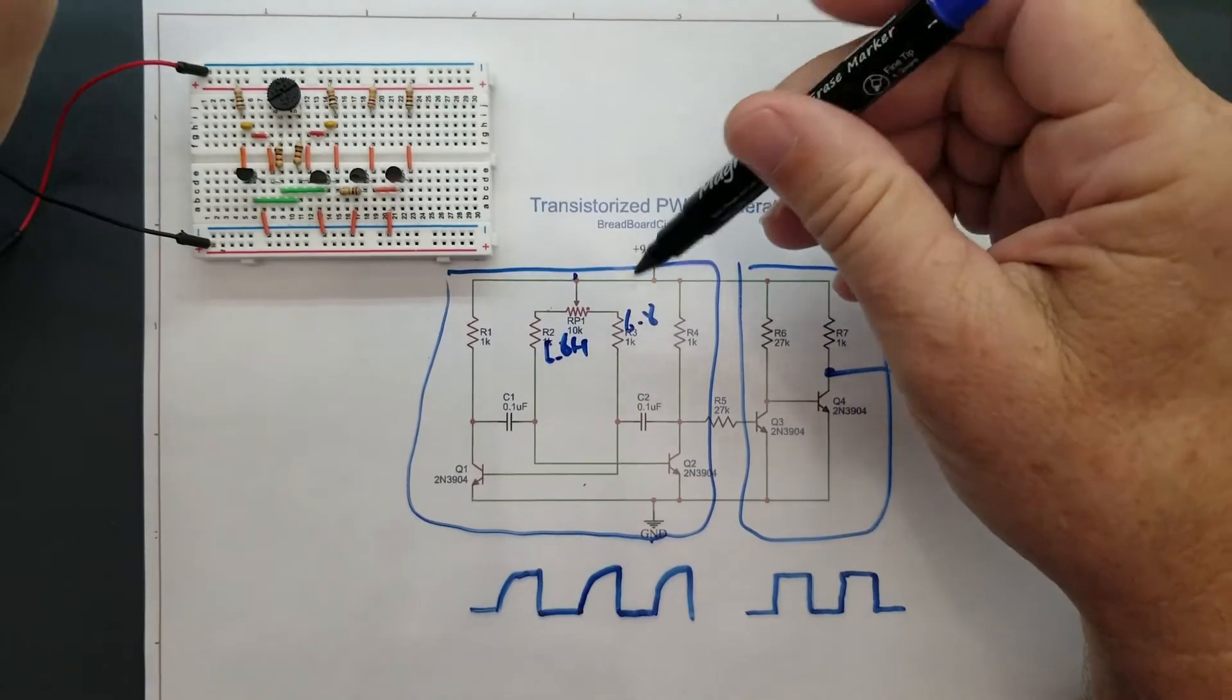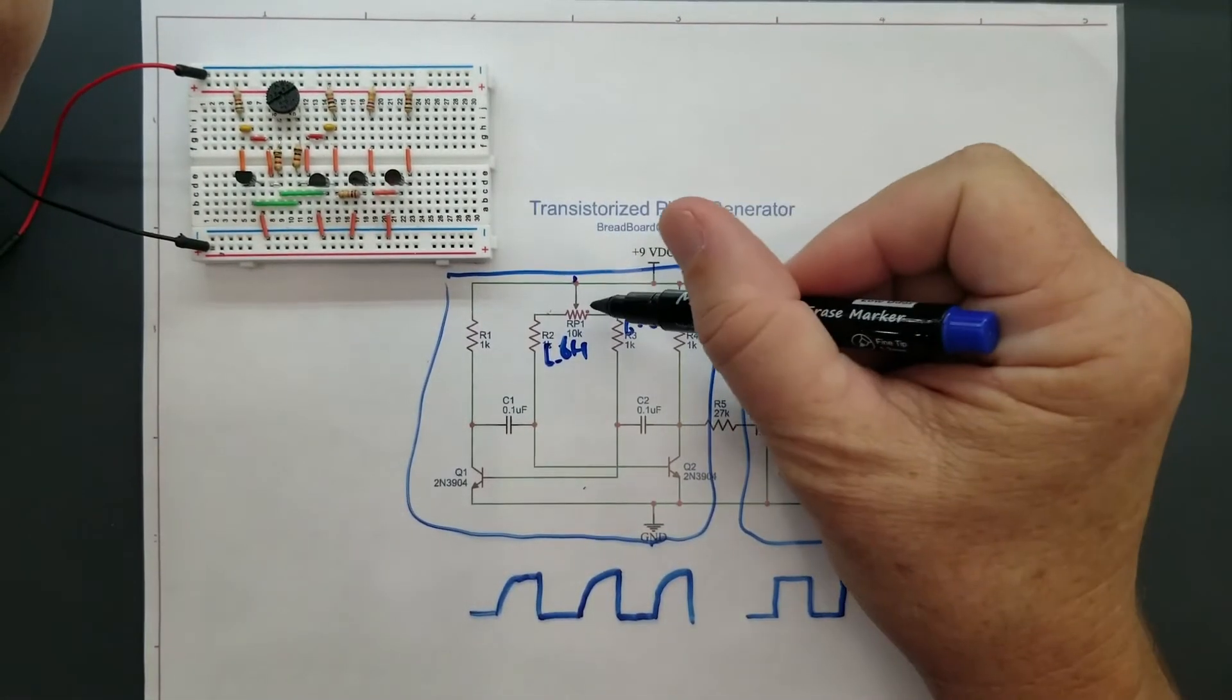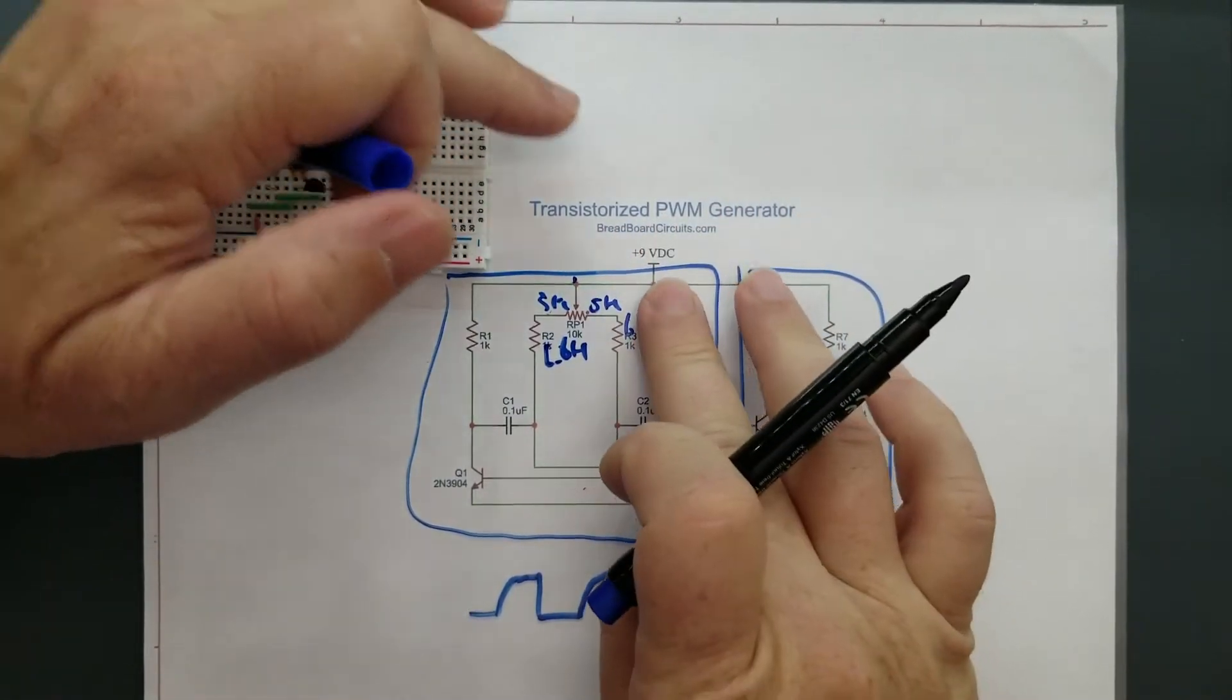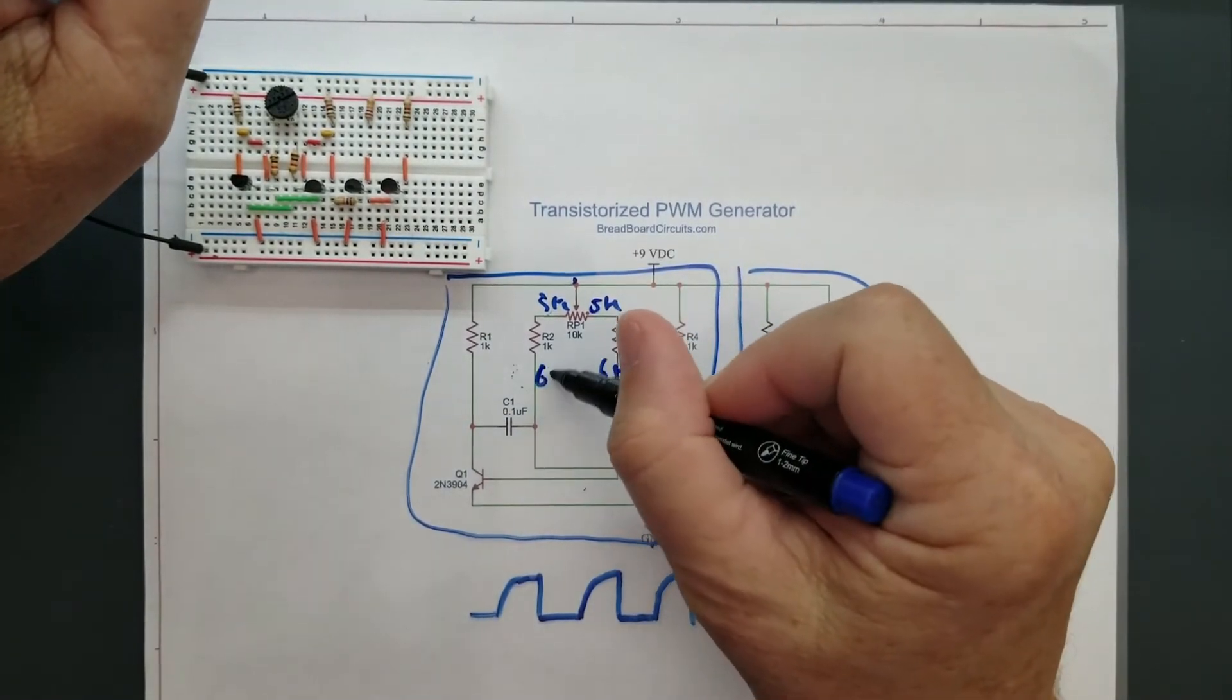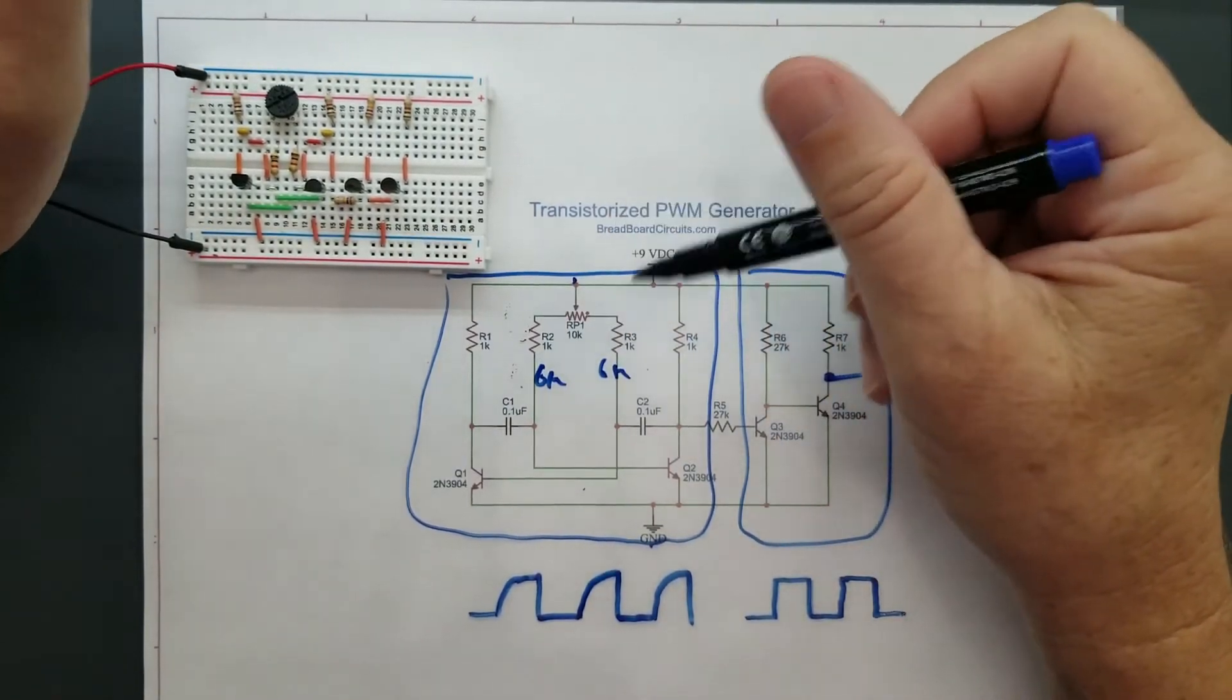These originally were around 6.8K. Introducing this 10K pot, you've got 5K on this side, 5K on this side, and now you've got these 1K resistors here. So you've got about 6K on this side, 6K on this side when the pot is at midway.